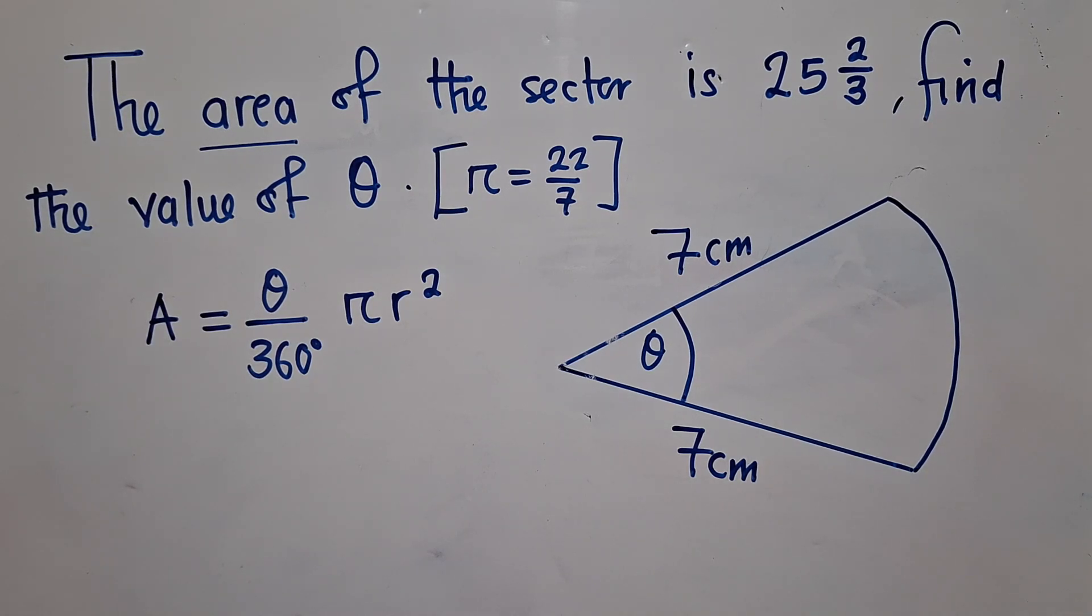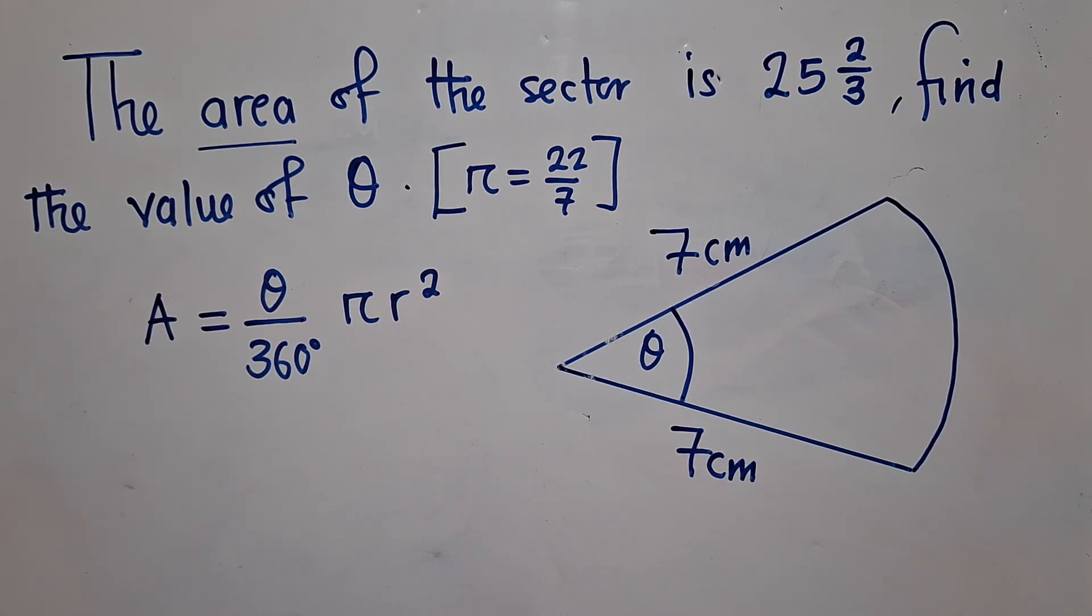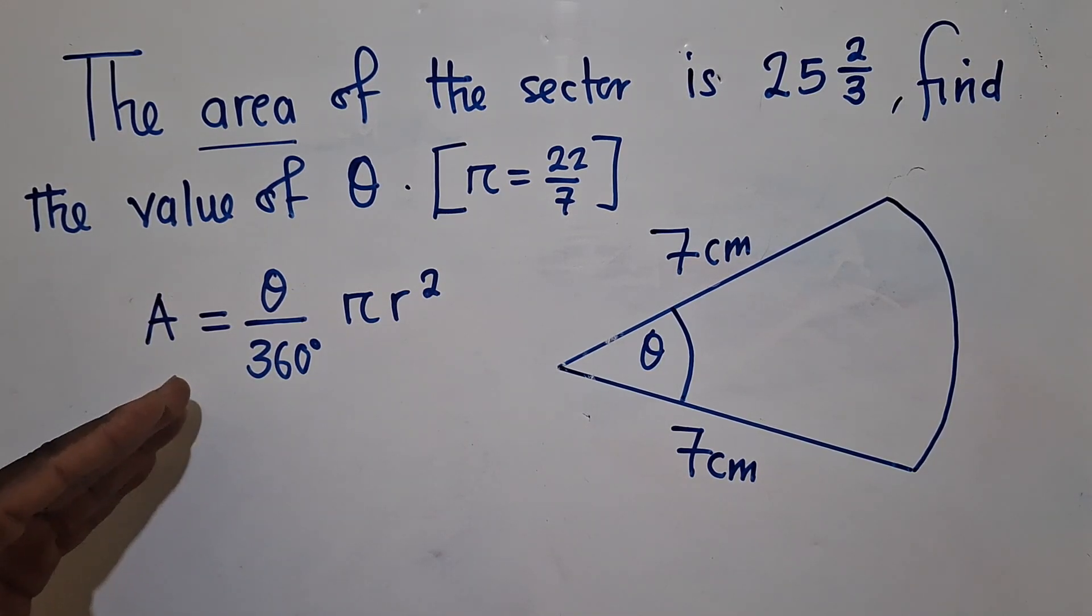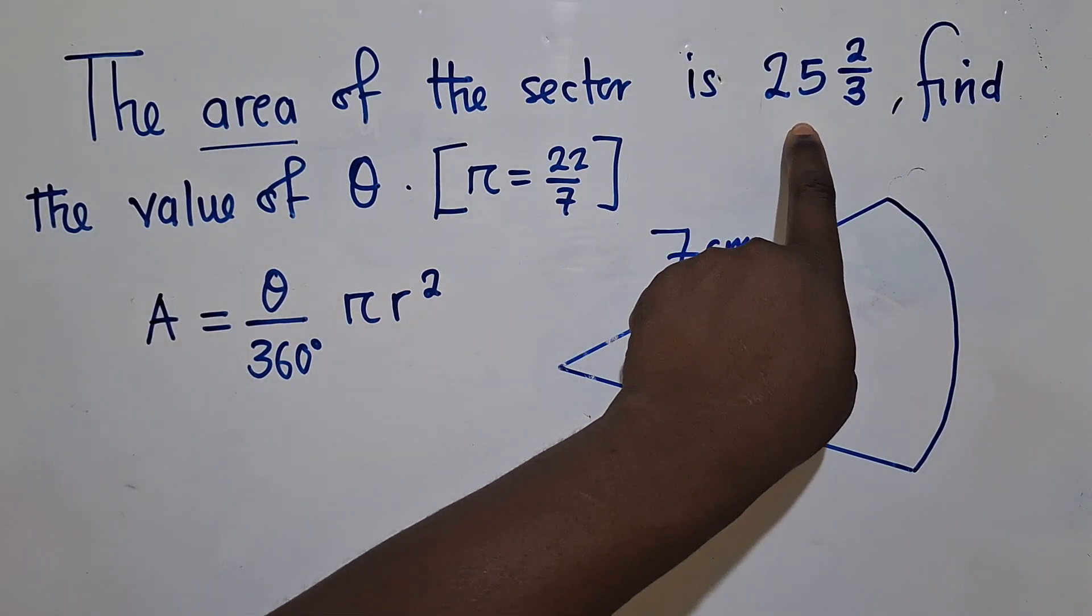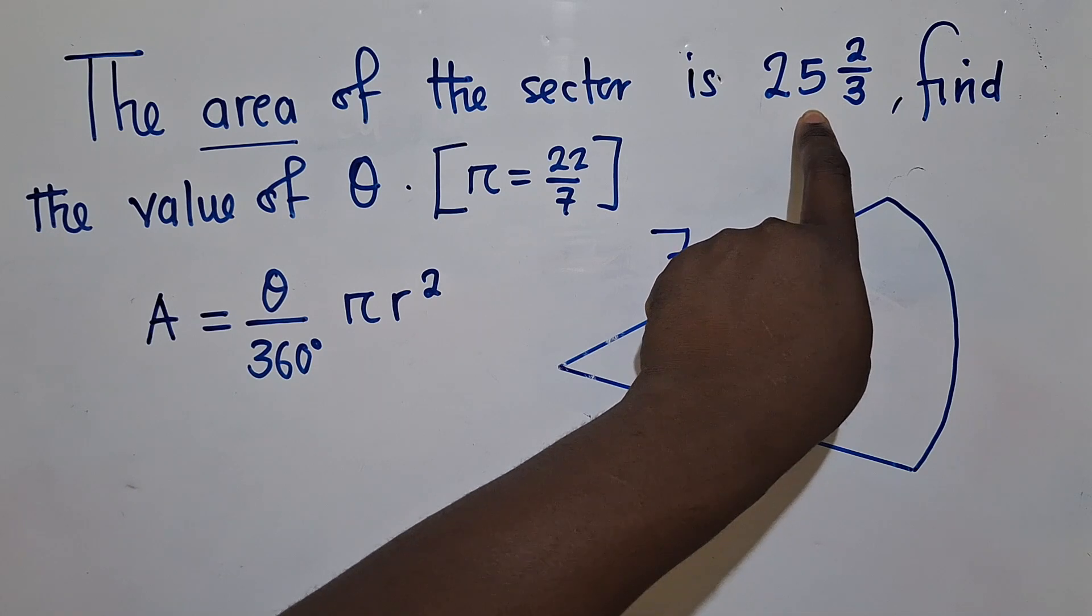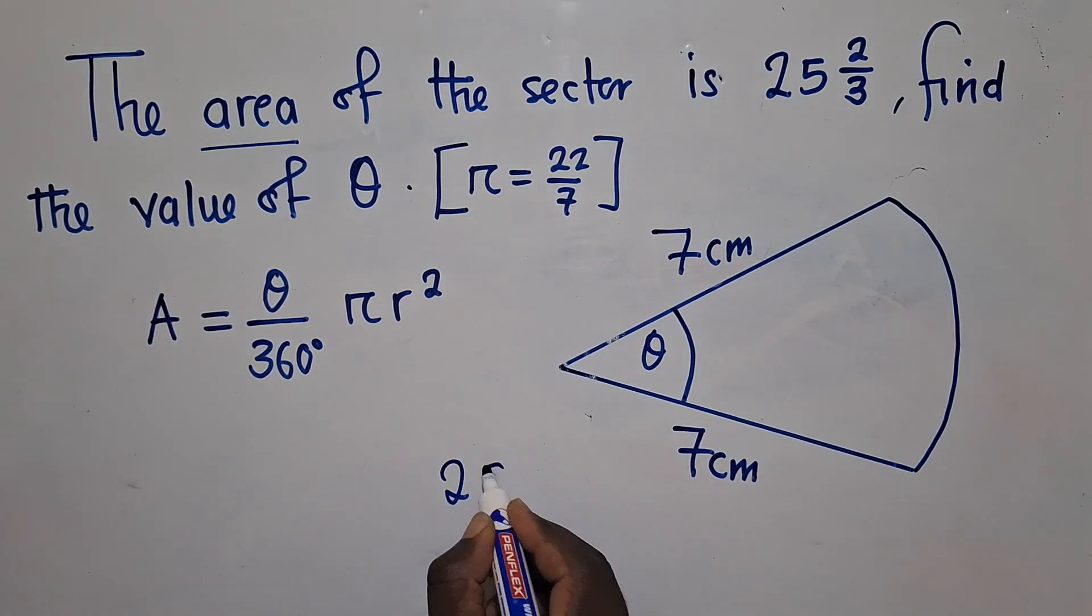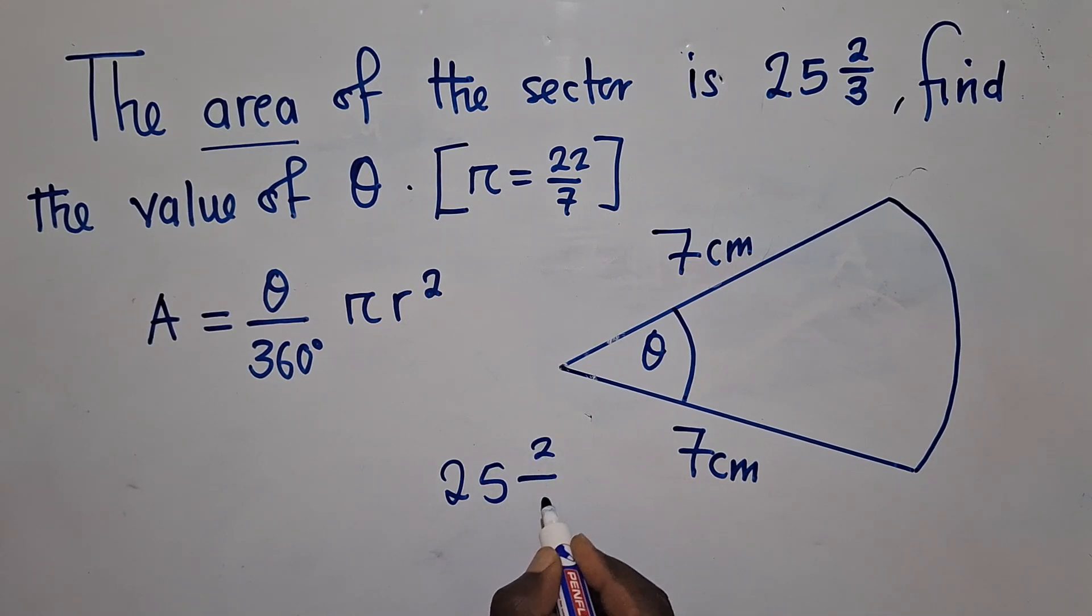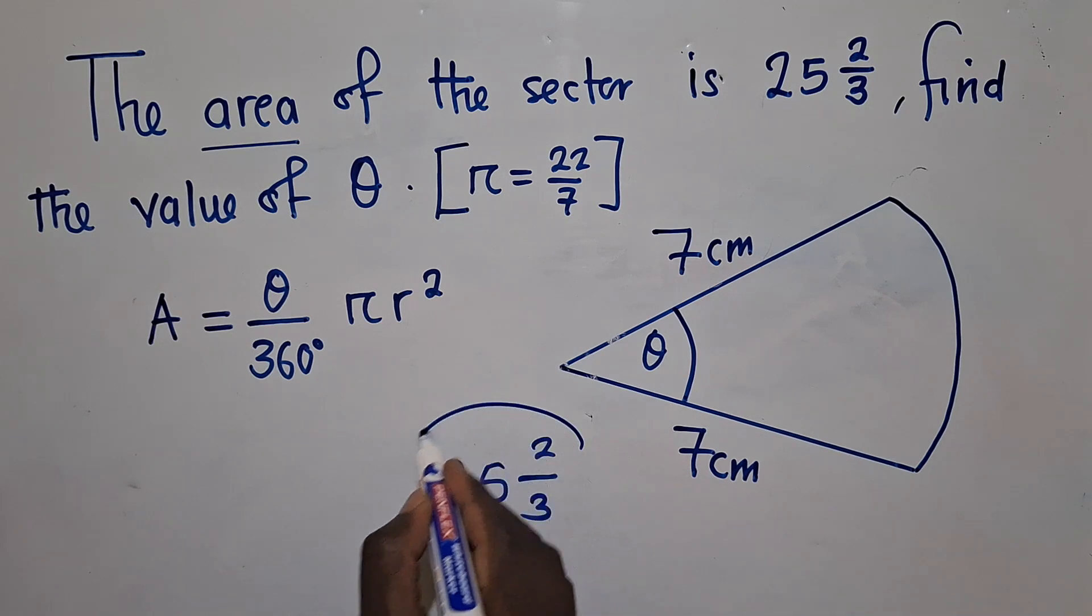So now upon getting to know the formula for finding area, we need to gather our data. Remember, area we've been given, it's right here. So let me write it here: it's 25 remainder 2/3. Okay, now we can't work with it the way it looks.